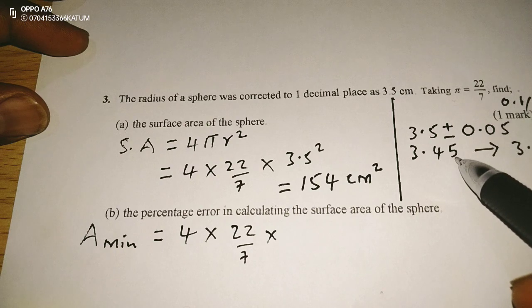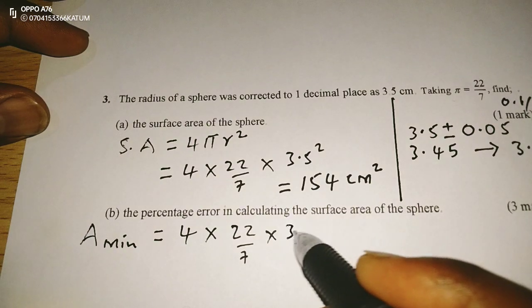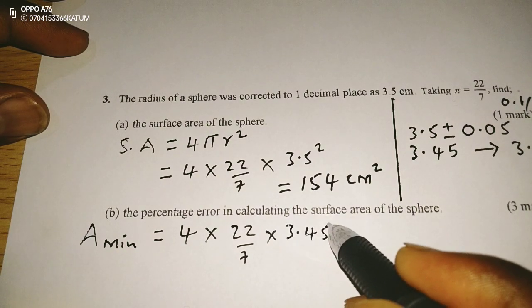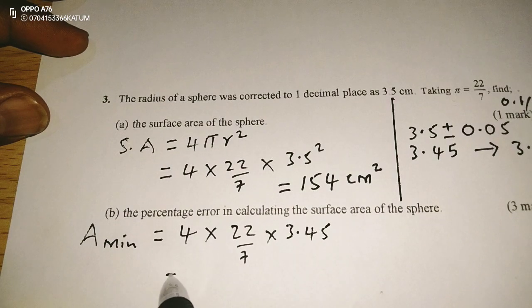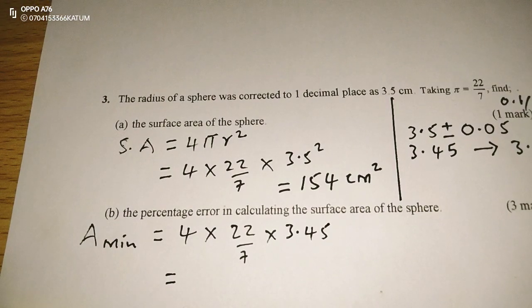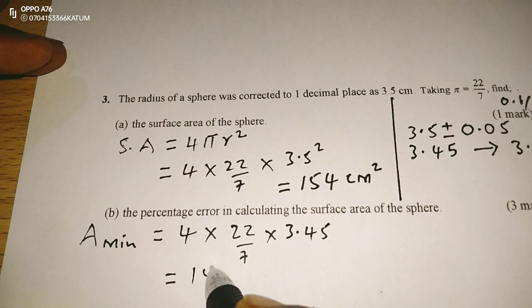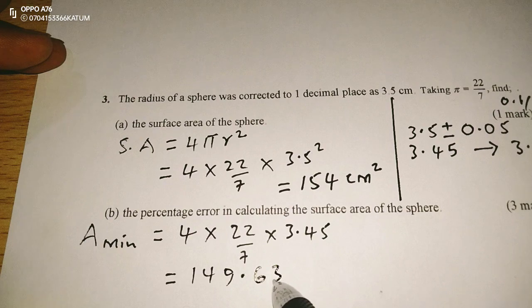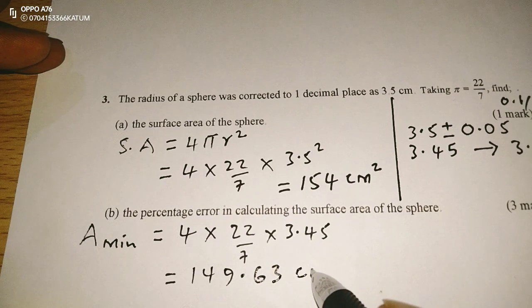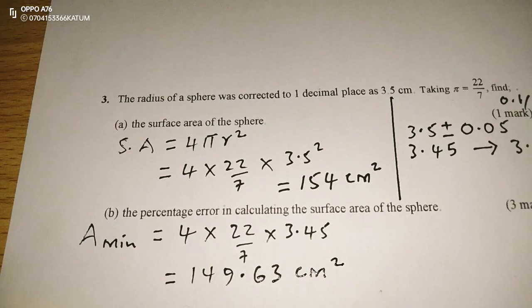Area minimum, we use the minimum radius 3.45. This is going to give us 4 by 22 out of 7 multiplied by 3.45 squared. This is going to be 149.63. This is to 2 decimal places square centimeters.